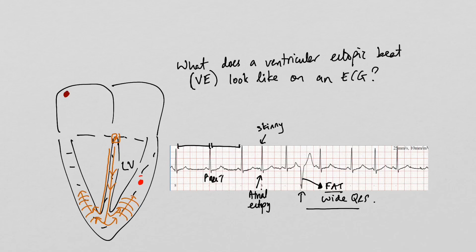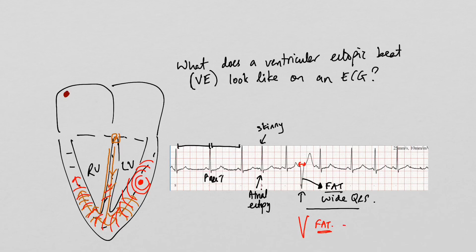With a ventricular ectopic beat, the activation is rather slow and causes the ventricles to activate from one chamber first — in this example, the left ventricle — before slowly making its way to the right ventricle. This slowing of activation within the ventricles causes a broadening of the QRS complex, producing this fat beat, called a wide QRS complex beat. This typically signifies a ventricular ectopic beat, and this is what a physiologist looks for when analyzing your ECG or Holter monitor to determine whether ectopic beats originate from the atria or the ventricle.